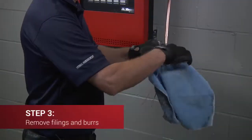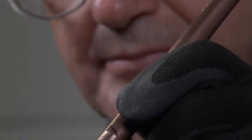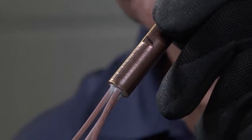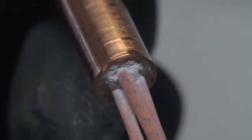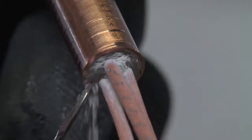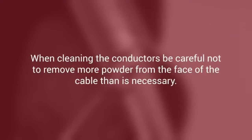Wipe clean all of the surfaces including the conductors to remove loose powder, and visually inspect the magnesium oxide insulation at the face of the cable for traces of copper filings and burrs. If present, you can remove them with a pick or gently tap them out, but do not blow them out as this can introduce moisture into the end of the cable. When cleaning the conductors, be careful not to remove more powder from the face of the cable than is necessary.